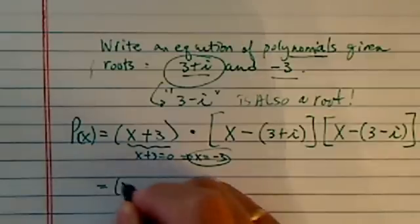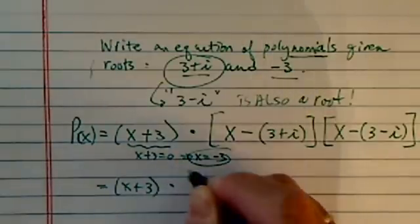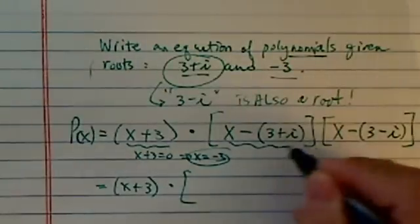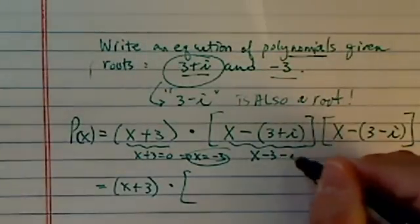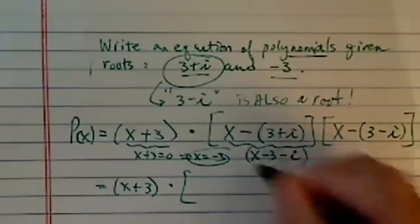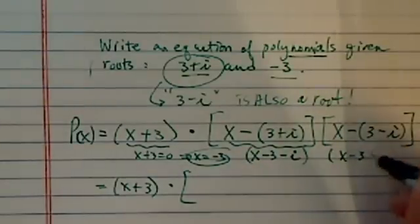From here, there's a couple of tricks. Let's see if we can spot them here. Now, notice here, if you open it up, you have x minus 3 minus i. That's the first one. x minus 3 plus i.